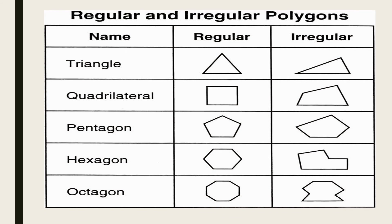Regular and irregular polygons. Triangle: look at the regular figure and the irregular figure of the triangle. Quadrilateral: look at the regular figure and the irregular figure. Pentagon, hexagon, and octagon.